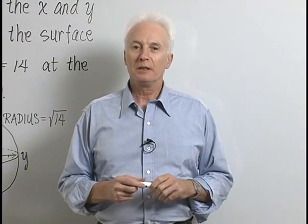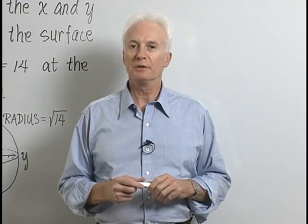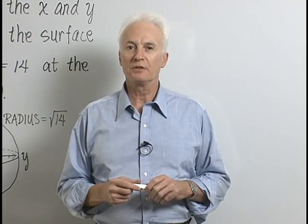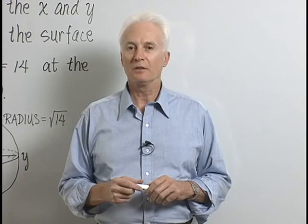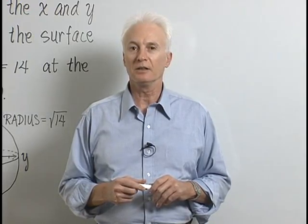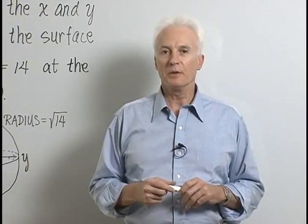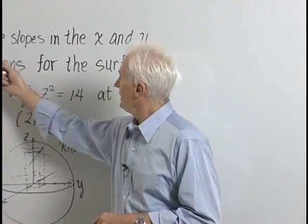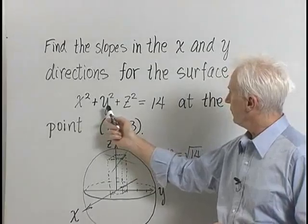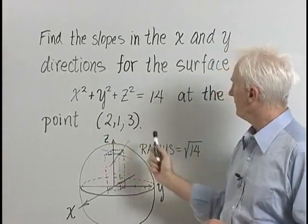When you take a derivative, you're really finding a tangent slope. For a function of two variables, the partial derivative with respect to x gives the tangent slope to the surface in the x direction, and the partial derivative with respect to y gives the tangent slope in the y direction. Let's look at an example where we calculate slopes in different directions for a surface.